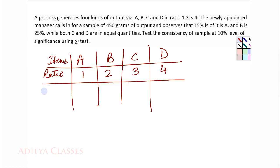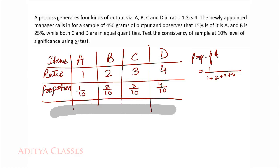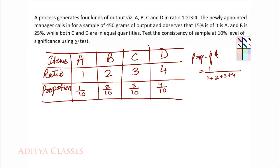Let me understand the situation. We have 4 items A, B, C and D. They should have been in ratio 1:2:3:4. If ratios are 1:2:3:4, then their proportions will be: proportion of A = 1/10, proportion of B = 2/10, proportion of C = 3/10, and D = 4/10. Whenever we gather any sample, ideally it should follow these proportions.